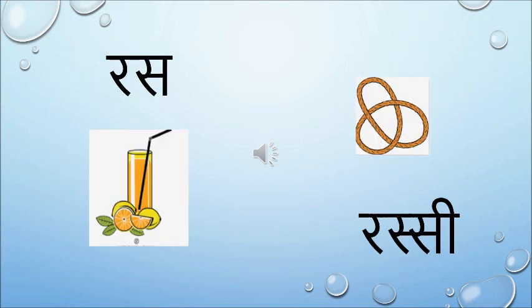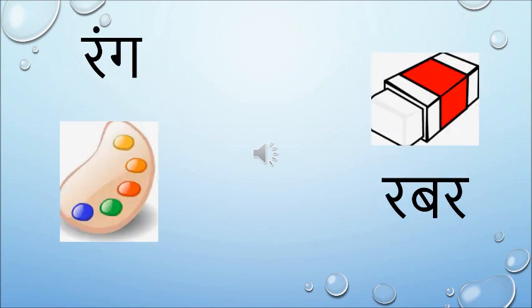Ra se Ras. Ras means Juice. And Ra se Rasi. Rasi means a Rope. Ra se Rabad. Rabad means Eraser. And Ra se Rang. Rang means Colors.